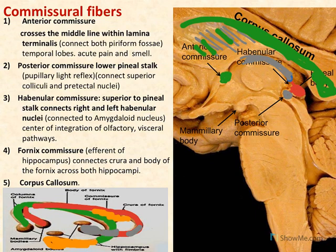Just in front of the fornix, we can see rounded nuclei called the amygdala. The amygdala are parts of the limbic system and also basal nuclei. They have an important function in controlling smell sensation and lie within the uncus on the tentorial surface of the brain.